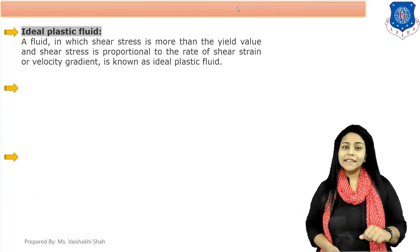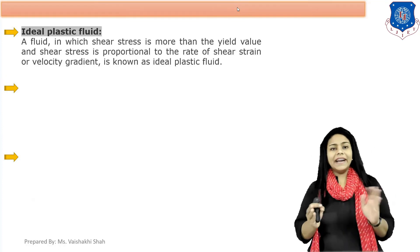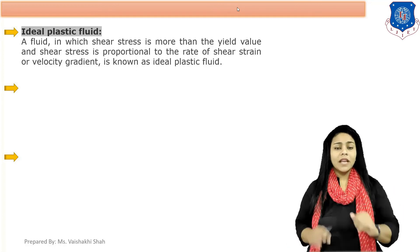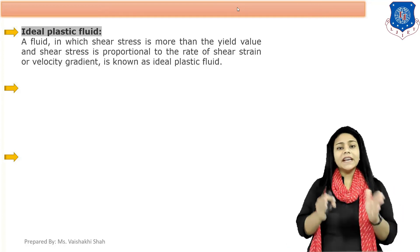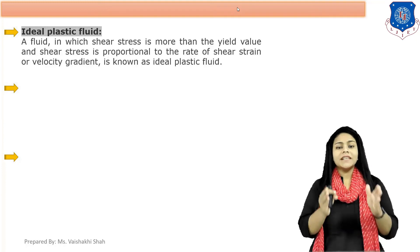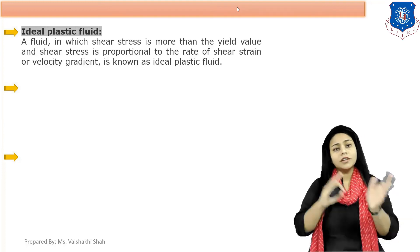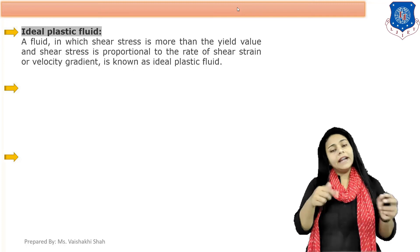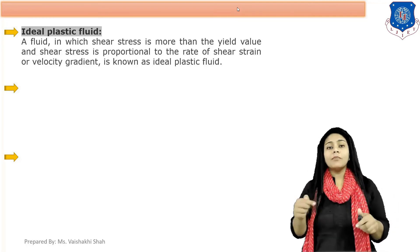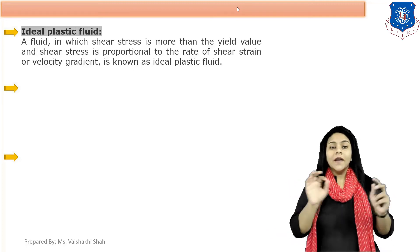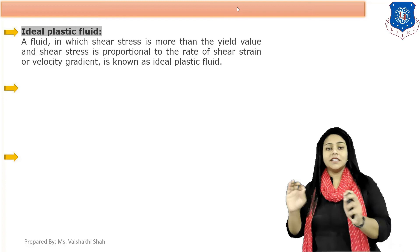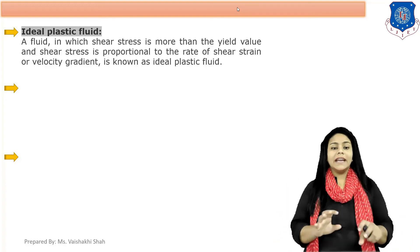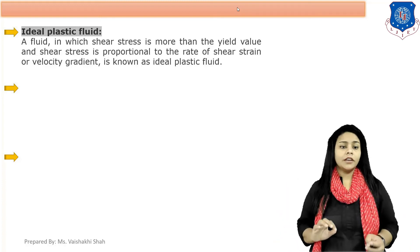Next is ideal plastic fluid. In ideal plastic fluid, shear stress tau is more than the yield value and also tau is proportional to du/dy. When both conditions hold — tau greater than yield value and tau proportional to du/dy — that is called ideal plastic fluid. Again, it is an imaginary fluid.